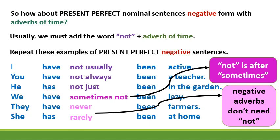Repeat these examples of present perfect negative sentences: I have not usually been active. You have not always been a teacher. He has not just been in the garden. We have sometimes not been lazy. They have never been farmers. She has rarely been at home.